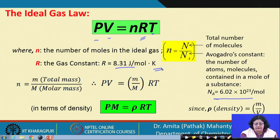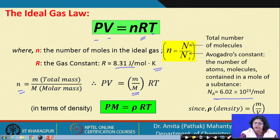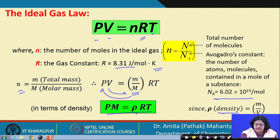We can write another expression for the ideal gas law where we express the number of moles as total mass divided by molar mass. Since mass divided by volume is density, we can rewrite the equation in terms of density. This gives the expression: P × M = ρRT, where P is pressure, M is molar mass, ρ is density, R is the gas constant, and T is temperature in Kelvin — the absolute temperature scale.